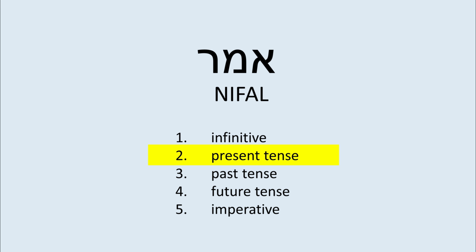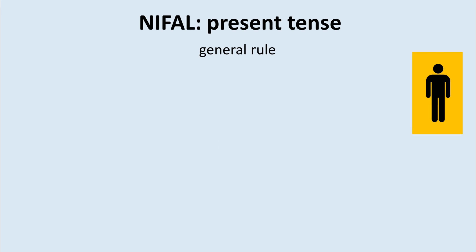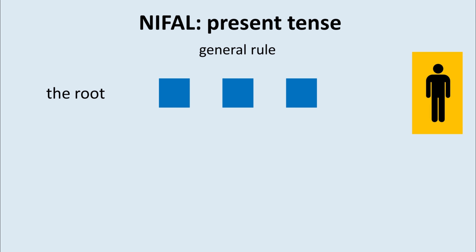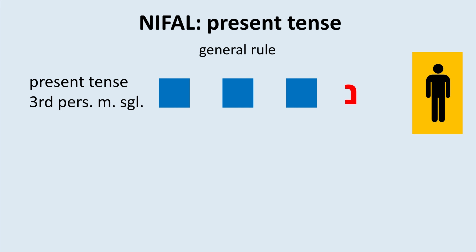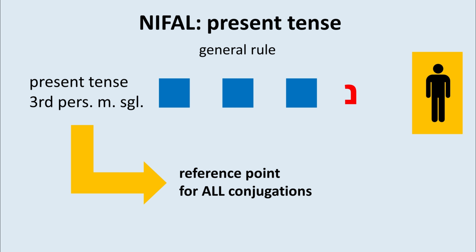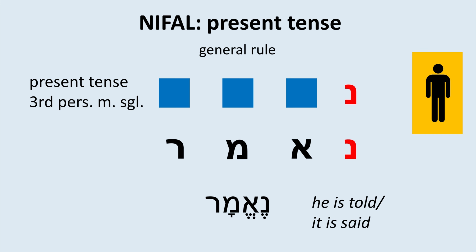Present tense. Remember, we start always with the third person masculine singular. That one is formed like this: you take the root and put a nun in front. Here is our root. We put the nun in front, and we read ne-emar — he is told, or it is said.